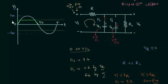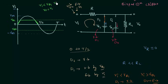Now we can plot the output waveform. Let's say this voltage level is Vb1 and this level is Vb2. When the input voltage Vi is smaller than Vb1, the output voltage equals the input voltage, so the waveform follows the input. When Vi is greater than Vb1, the output voltage is constant and equal to Vb1. This is how the output waveform looks for the positive half cycle.